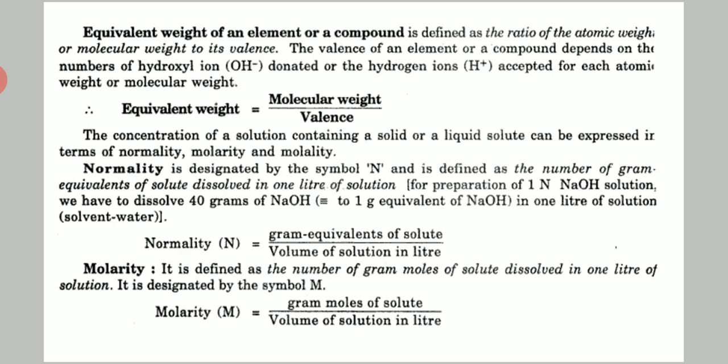Suppose we have hydrochloric acid, denoted by HCl. It dissociates into H+ and Cl−. There is one H+ and one Cl−, so we can say that the valency of HCl is one. The molecular weight of HCl is the atomic weight of hydrogen plus the atomic weight of chlorine. Since the valency is one, the equivalent weight of HCl is equal to its molecular weight.